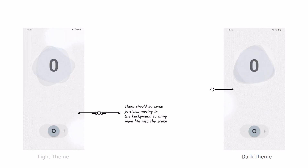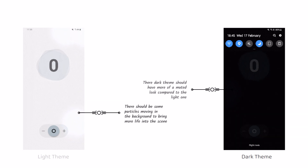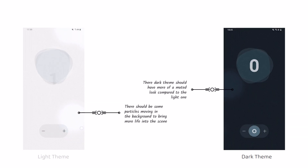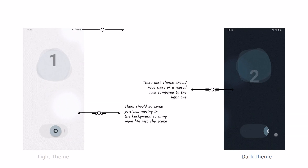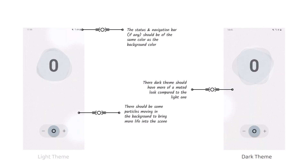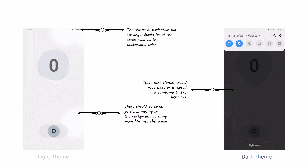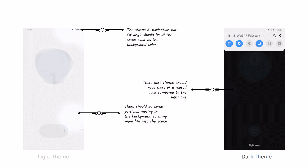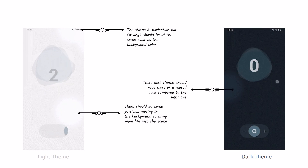In comparison to the light theme, I don't want the dark one to be completely black, but rather a darker gray accompanied by darker blues and grayish accents. The particles moving on the background should be of a dark shaded blue color. The status and navigation bar, if any, should be the same color as the background so that they integrate nicely with the current theme of the app.